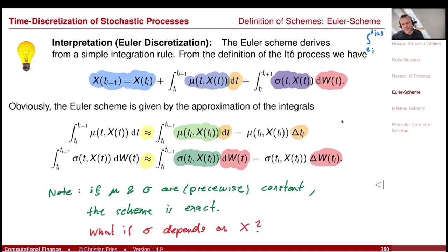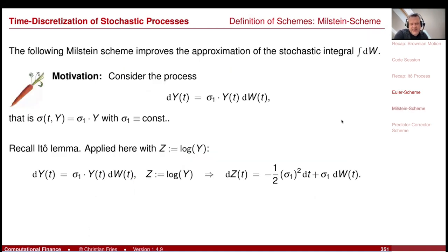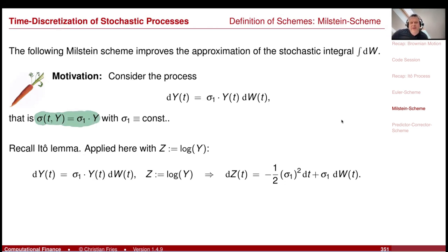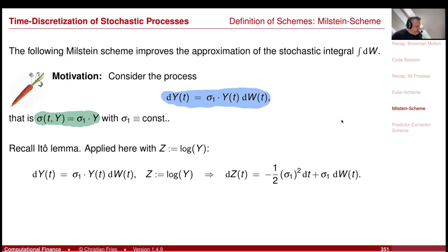Can we find a numerical scheme that is a little bit better when σ depends on X? This leads to the Milstein scheme. Assume σ(y) = σ₁·y — linear in y — so the process is dY = σ₁·Y dW. You can easily derive the solution using Ito's lemma by transforming to the variable z = log(Y), so Y = e^z.